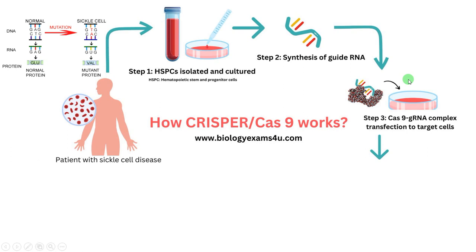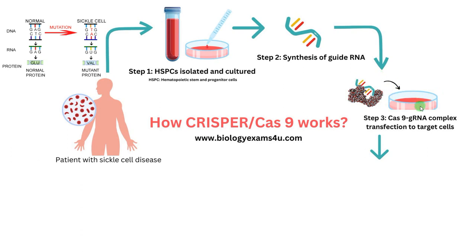Step 3 is Cas9 nuclease–guide RNA complex formation and transfection of that complex into target cells. Cas9 nuclease is an endonuclease, a DNA cleaving enzyme that is guided by this guide RNA. That is why this RNA is called a guide RNA — it guides Cas9 to make specific cuts at the specific DNA sequence that is complementary to the guide RNA. We will then transfect this guide RNA–Cas9 complex into the isolated cultured cells by means of electroporation, microinjection, etc.